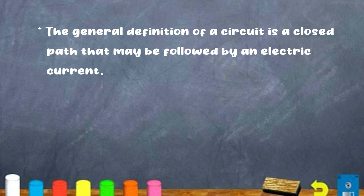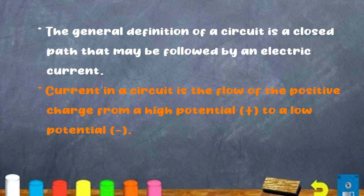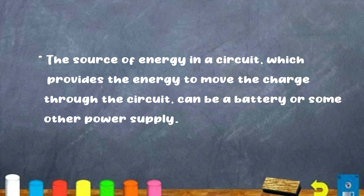Now, the general definition of a circuit is a closed path that may be followed by an electrical current. Current in a circuit is the flow of the positive charge from a high potential to a low potential. The source of energy in a circuit which provides the energy to move the charge through the circuit can be a battery or a power supply.